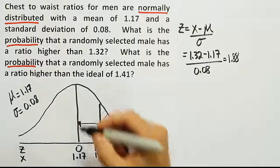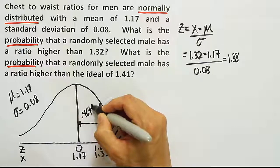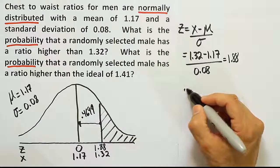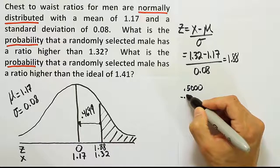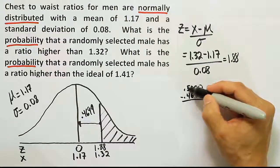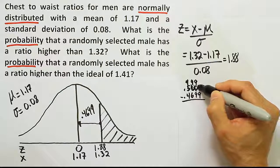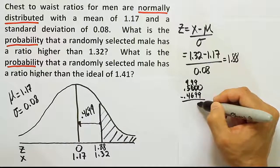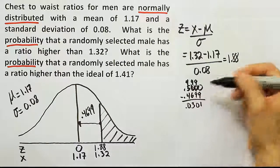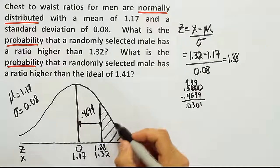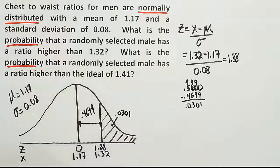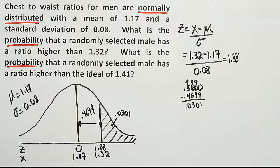Okay, so we find the answer 0.4699. To get the overall area for this part of the curve, we have to do 0.5 minus that area in the white space, 0.4699. And we'll do a little old school barring like always here. So 10 take away 9 is 1, then 9 take away 6 is 3. So we get the answer 0.0301. So the area in here is 0.0301, so about 3% or so.